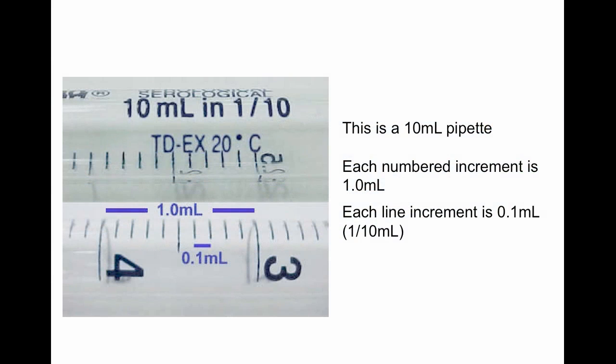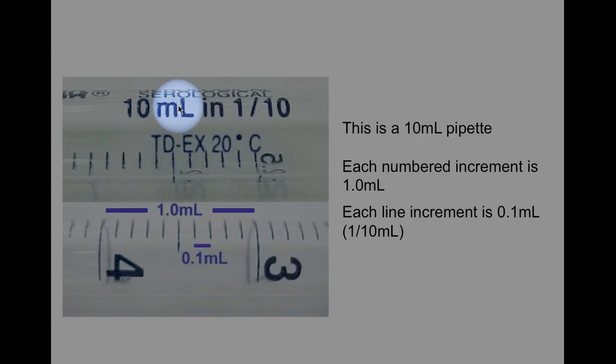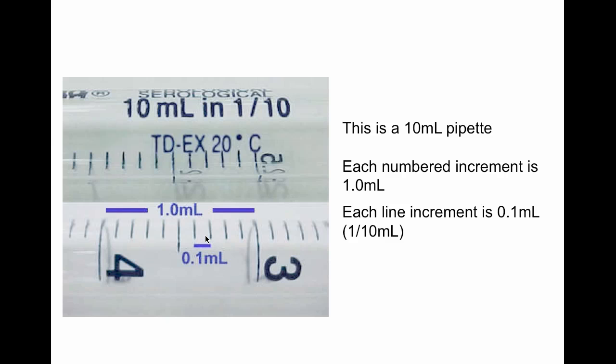This is a pretty typical one. This is a 10 ml pipet and as you can see, this is going to tell you what the maximum volume is that you can dispense and it tells you what the increments are. This means total delivered volume and it is calibrated at 20 degrees Celsius. So each numbered increment, for example, between the 4 and the 3, this is 1 ml. And then each line increment, these little lines, that's a tenth of a milliliter.